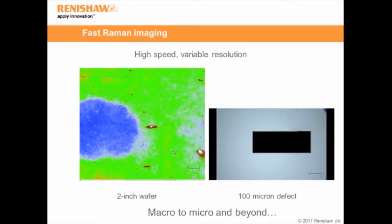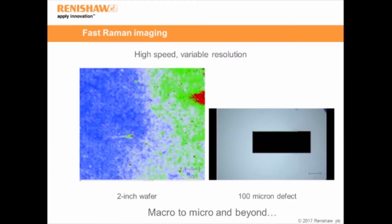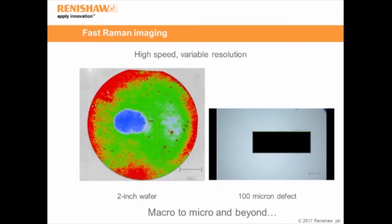Here I have two videos. One shows measurements of a 2-inch silicon carbide wafer — a large object — and the other shows a subsequent measurement of a defect, zooming in. With Raman imaging, we have the speed to measure these objects in very high resolution, but we also have a choice of resolution.